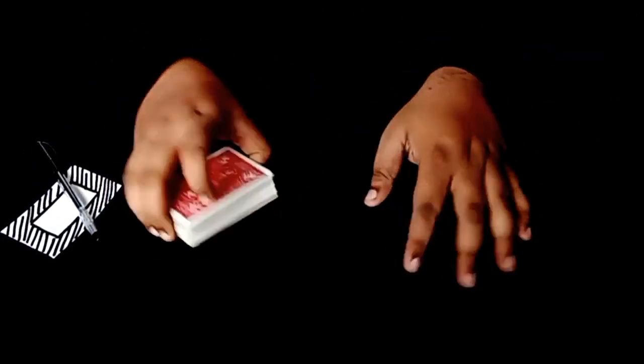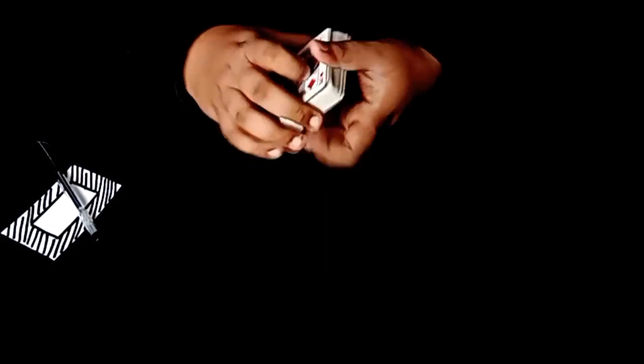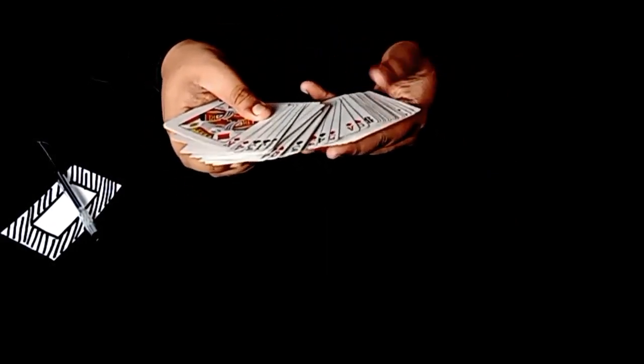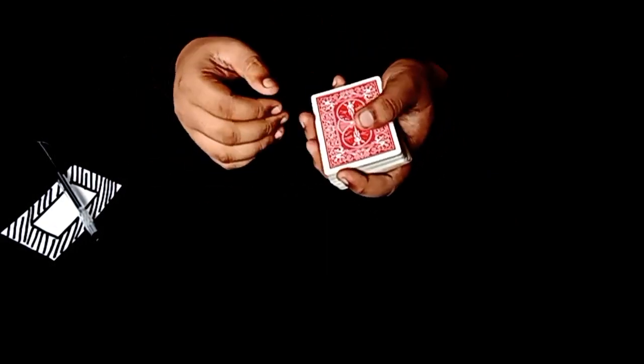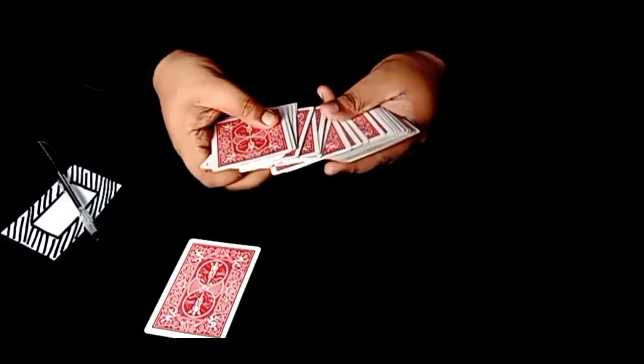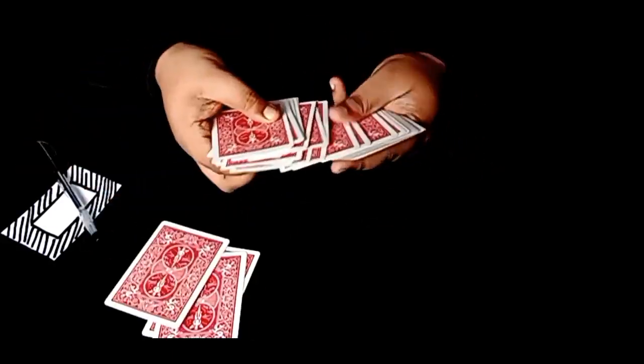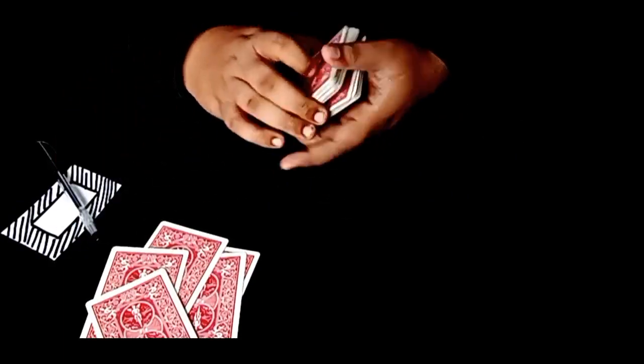So for our next trick, let's use this one pack of cards, a completely normal Bicycle deck. Now in this trick, the spectator has to go ahead and choose any random five cards. This step is completely done by the spectator.